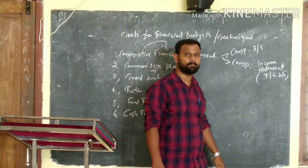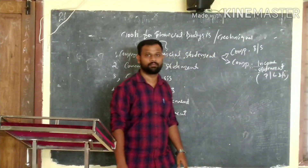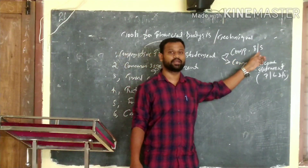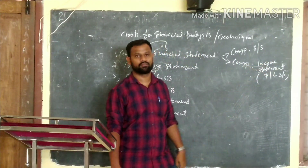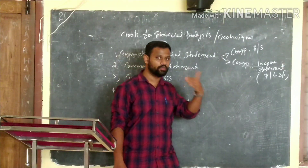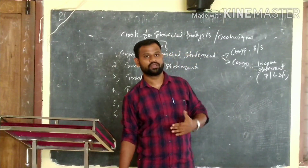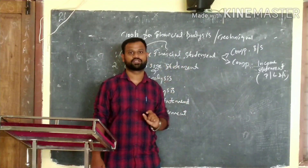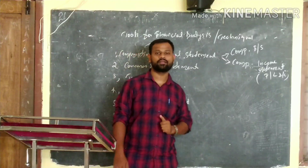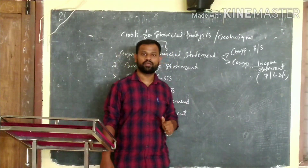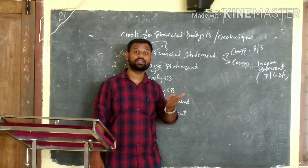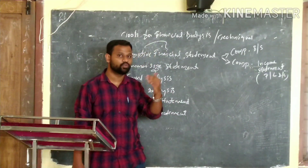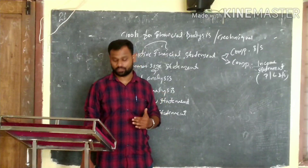We prepare the information for, say, 2001 and 2002, and compare the details. The first column has items, the second column has the amount in 2000, the third column has the amount in 2001, and the next column shows the increase or decrease and the percentage of increase or decrease.